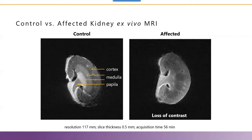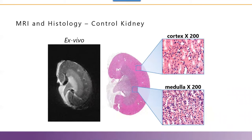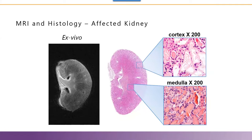Ex vivo MR of kidneys from treated mice on day 3 indicated diffuse pallor associated with loss of regional distinction when compared to control animals in which two distinct regions are clearly identified. The ex vivo MR of a control animal kidney clearly identifies all regions, which is nicely compared to the validating histology picture. In treated mice, the MR view is validated by histopathology characterized by cortical tubular necrosis and medullary tubular presence of hyaline casts.